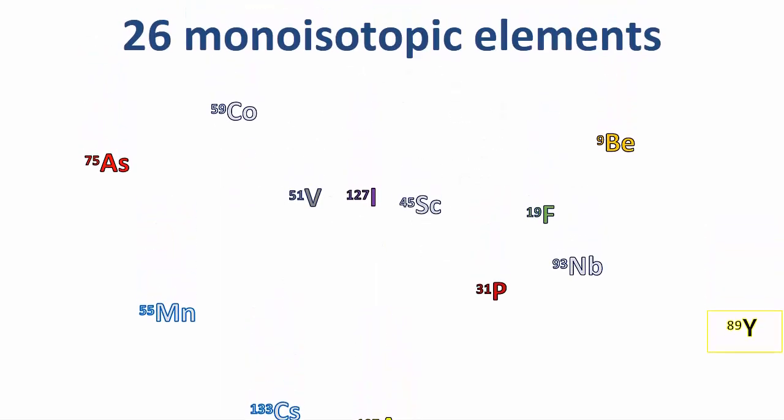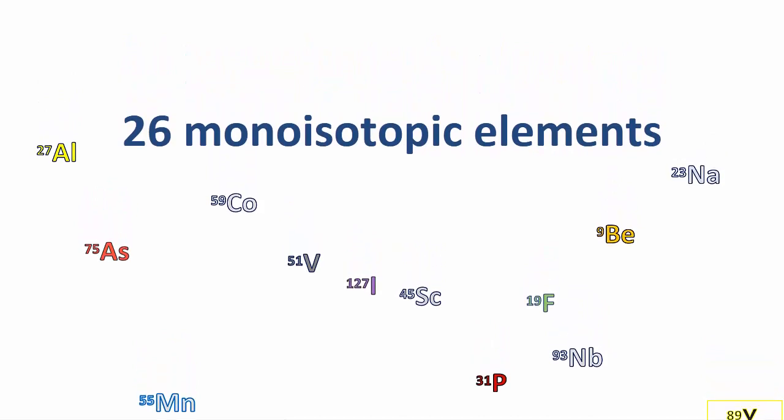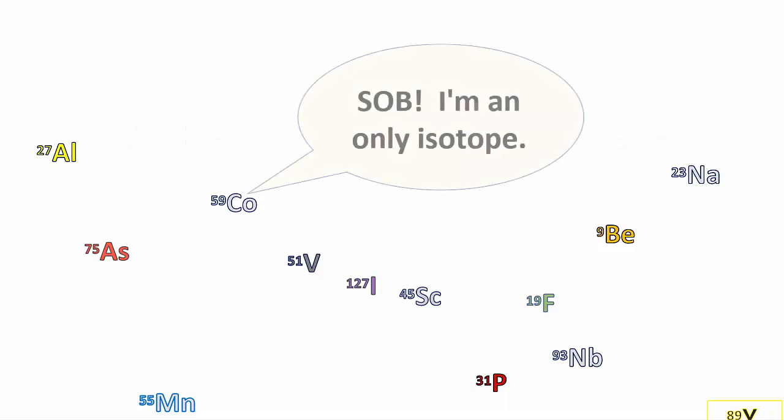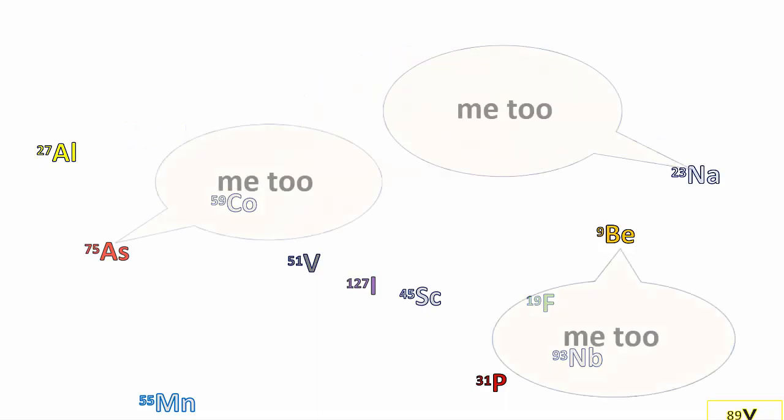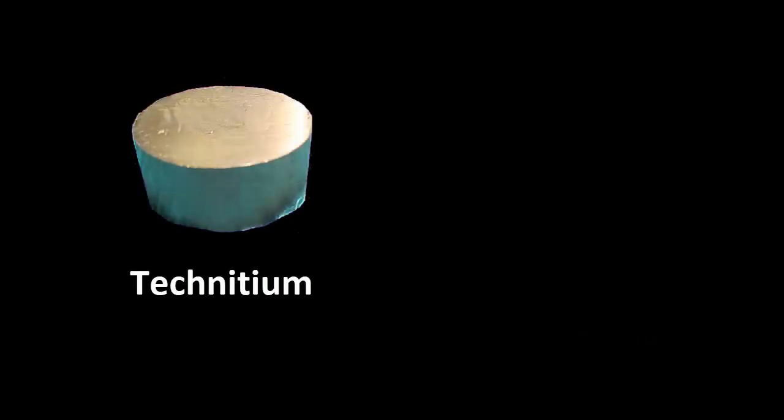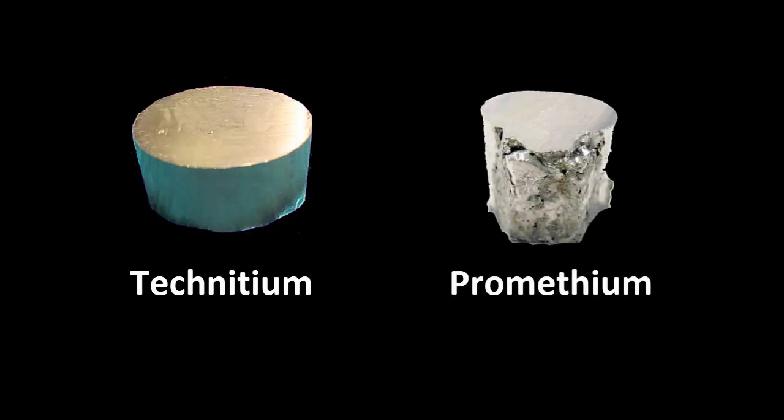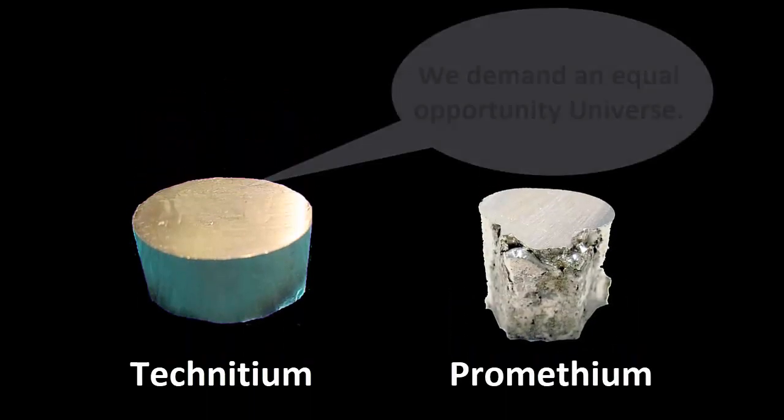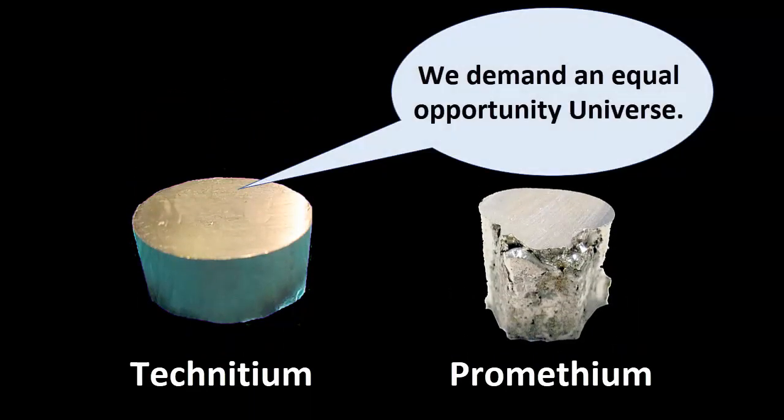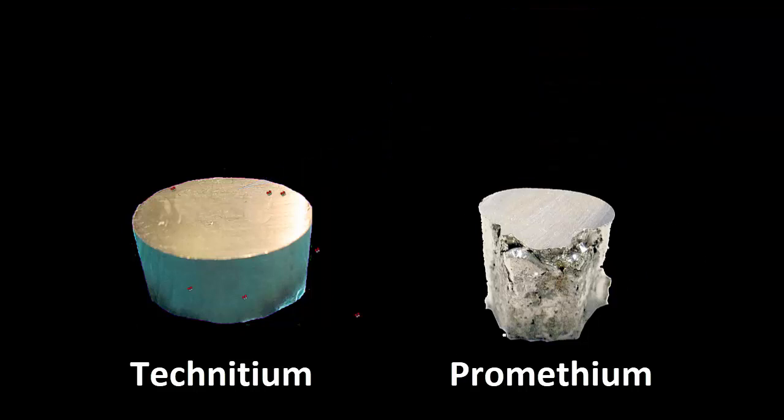There are 26 mono-isotopic elements, meaning they only have one stable isotope. And there are two elements with no stable isotopes at all. Technetium and Promethium. These samples are radioactive, so they don't count.